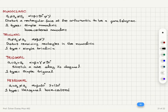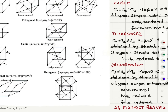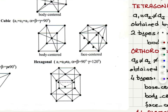Then we have hexagonal. A1 and a2 are equal, but a3 is not equal to a1. Alpha and beta are 90 degrees and gamma is 120 degrees. There is only one type: hexagonal base-centered.